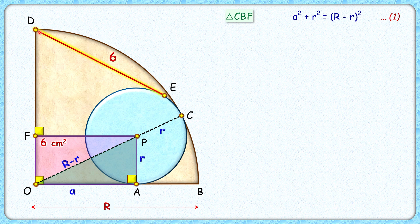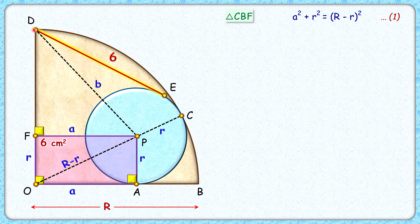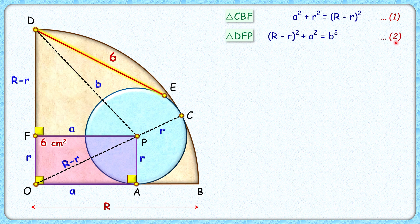Now let's join DP and assume its length is b centimeters. OA is 'a', thus FP length will be 'a' centimeters. FO length will be the same as PA, which is r centimeters. DO length is the radius of the quadrant, capital R, thus DF will be R minus r. In this right angle triangle, applying Pythagoras theorem, we get: (R − r)² + a² = b². Let's call this observation number two.